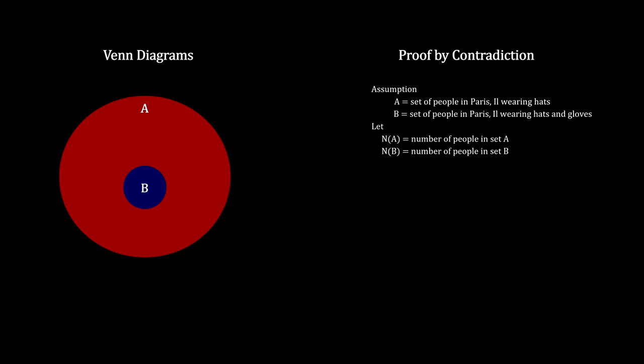Now we count the number of people with hats, and we count the number of people with hats and gloves. If the number of people with hats and gloves is greater than the number of people with hats, you have a contradiction, a violation of the basic assumption. The assumption that they are counting people in the same town on the same day must be false.